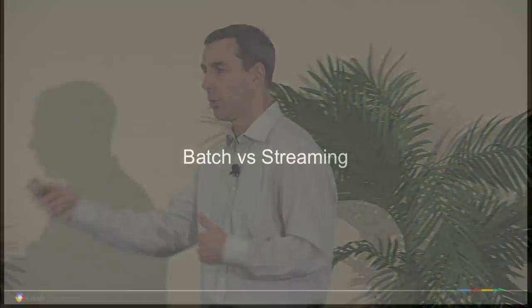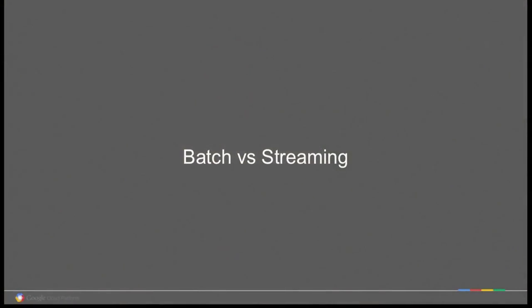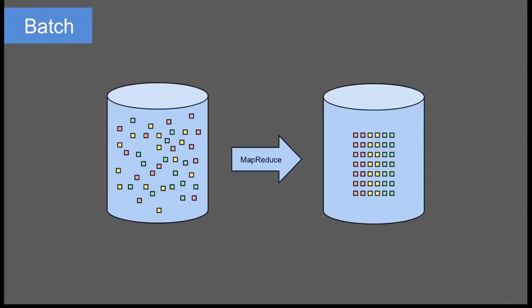If you have a finite input, the processing is easy — that's what MapReduce works very well for, or Flume, or many parallel processing frameworks. Unfortunately, most useful and interesting data sources are not like that. Word count on the works of Shakespeare is nice because, as one good thing about Shakespeare, he doesn't write anymore, so you don't have to rerun the job later.